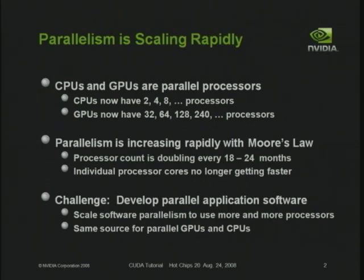If you look at CPUs today, you can easily get two, four, eight, and more processors on a single die. GPUs, interestingly enough, have been out in the forefront. They have a far larger processor count and a far larger thread count internally. They're heavily multi-threaded, running thousands of independent threads, mainly to draw pixels in games.